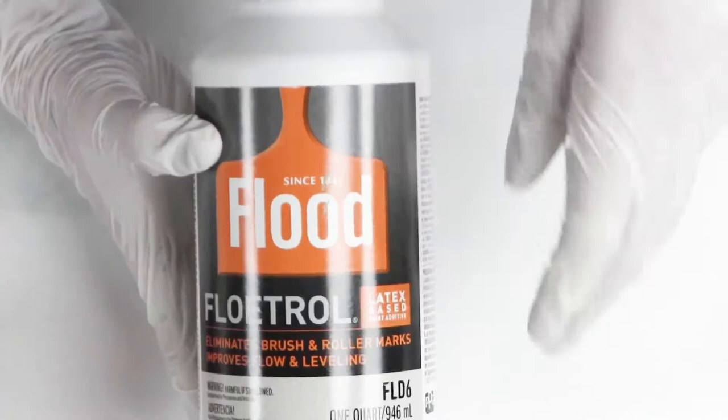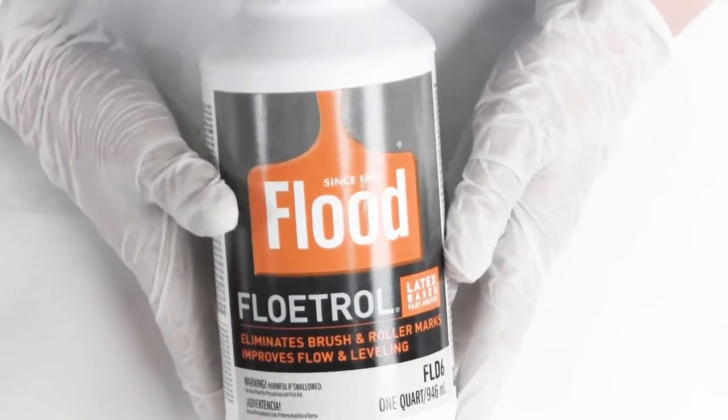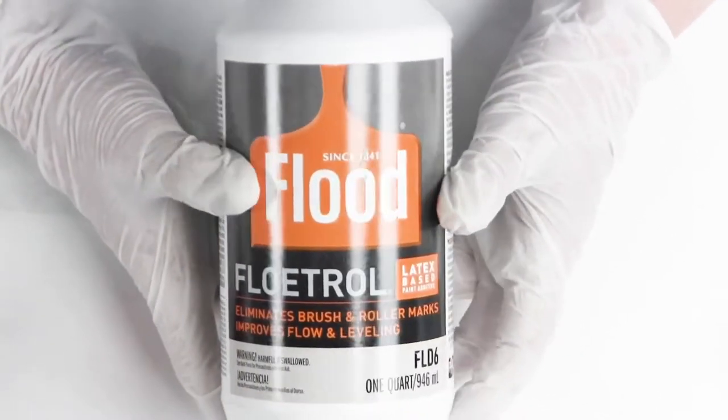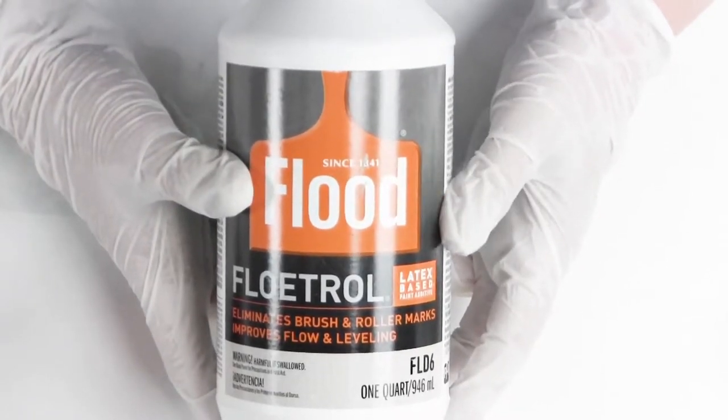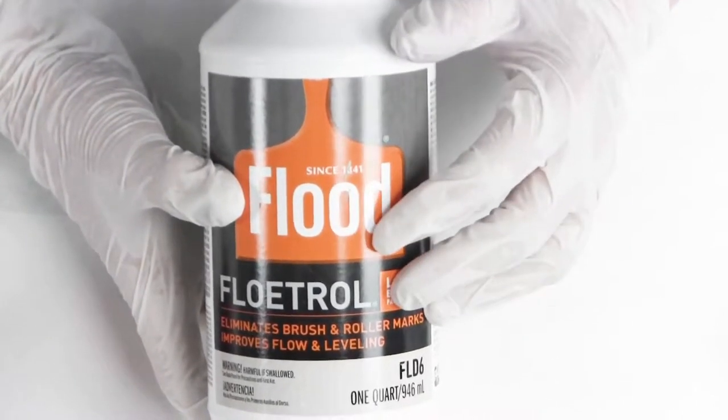Floetrol is a brush conditioner, a paint conditioner. It's supposed to make it so you don't see the brush strokes. It has a very strong chemical that acts as a surfactant that breaks down the surface tension of the paint.